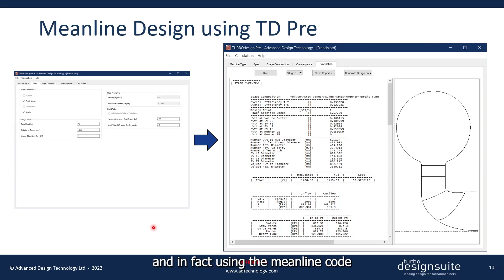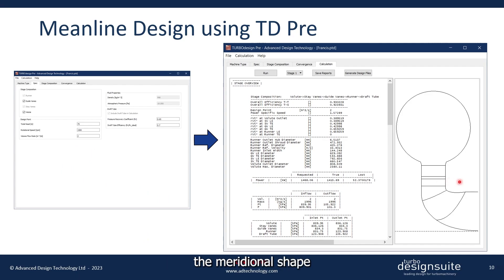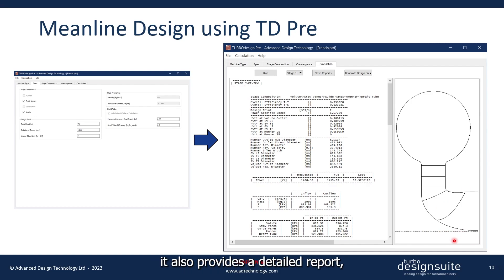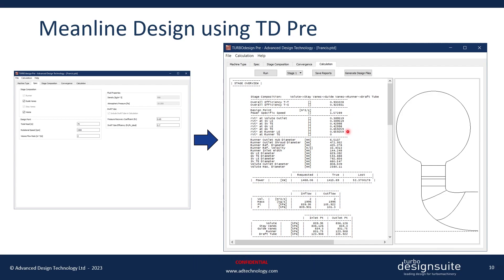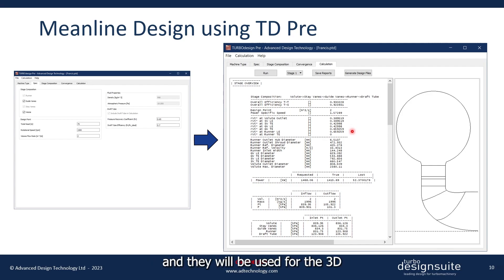Using our mean line code TurboDesign3, it's very easy to enter the given specs and it quickly generates the meridional shape of the Francis Turbine stage in less than a second. As you can see, it also provides a detailed report including the estimated stage performance, some important dimensions, and the required RVT* for the stay vanes, guide vanes, and the runner. These RVT* values for the different components are equivalent to their work coefficients and will be used for the 3D inverse design of the vanes and the runner in the next session.